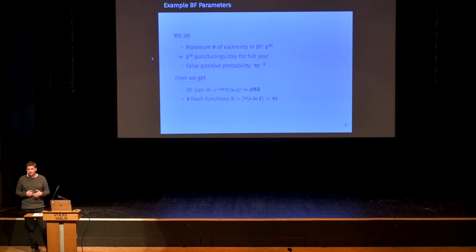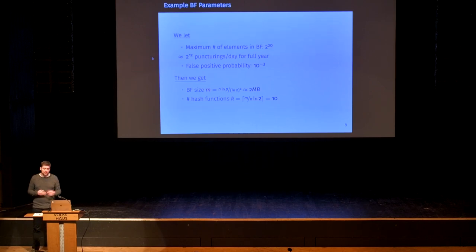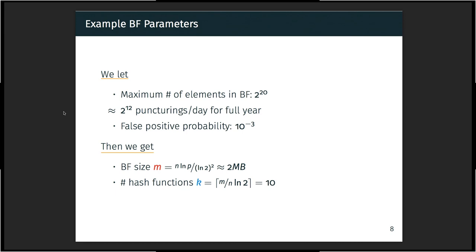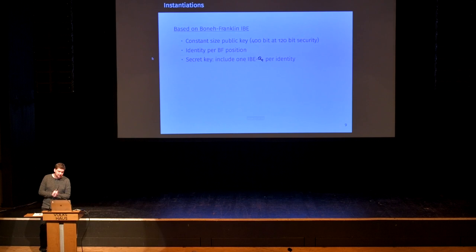To give a basic idea of concrete numbers: we set the maximum number of elements in the bloom filter to 2^20. This would allow approximately 2^12 puncturings per day for a full year — quite a reasonable setting for smaller servers. The false positive probability is set to 10^-3. The bloom filter size is 2 megabytes and the ideal number of hash functions in this setting is 10, which keeps ciphertext sizes quite compact.